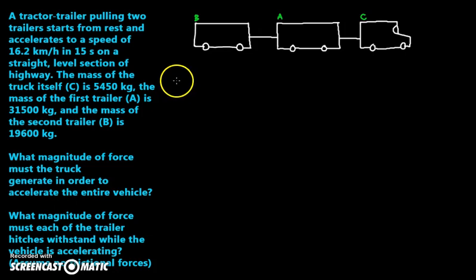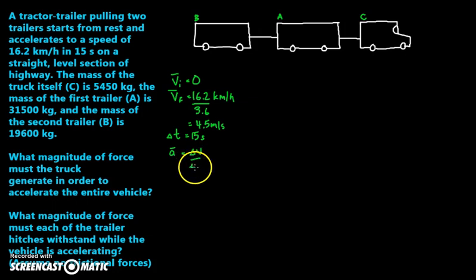I'm trying to find the acceleration. I know it started from rest, so vi equals zero. I know vf is 16.2 kilometers per hour. If I divide by 3.6, that gives me 4.5 meters per second. I got a delta t of 15 seconds. I know that acceleration equals delta v over delta t, so that's 4.5 divided by 15, which gives me an acceleration of roughly 0.3 meters per second squared. So I got my acceleration now.